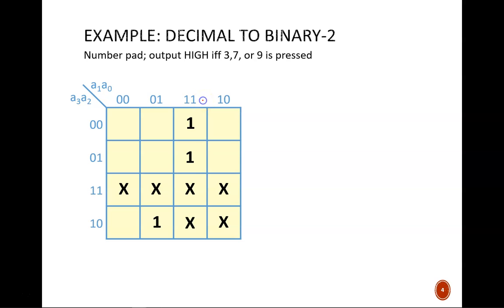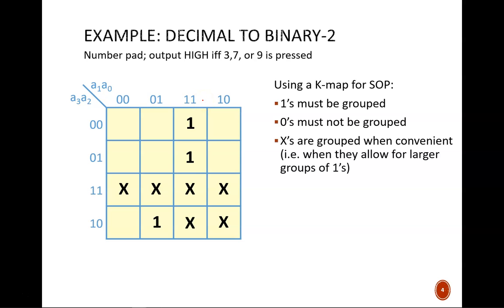Now, to make the groups, we need to follow these guidelines. All ones must be grouped, because the light must turn on for those cases. No zeros can be in any groups, because the light must be off for those cases. And the X's are flexible. We group them when they are convenient for us, which here means where they allow for larger groups. So, look at this K-map and identify the two best groups to use. Pause the video while you do so.